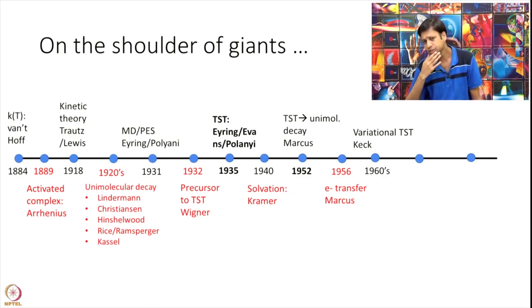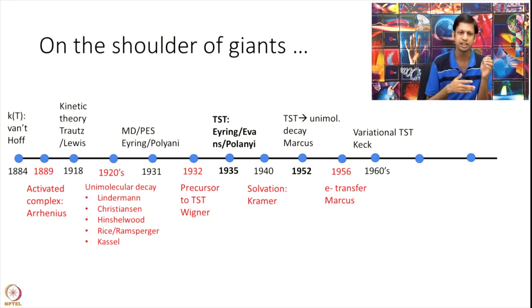In 1960s, Keck has a very nice work on quantifying transition state. So remember almost 100 years later, I mean 80 years roughly. In 1889, Arrhenius had postulated the existence of a transition state. In 1960, basically Keck said I can mathematically tell you exactly what it is. I can write a mathematical description of transition state.